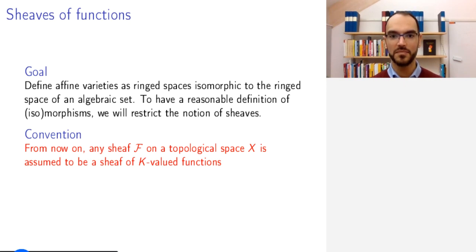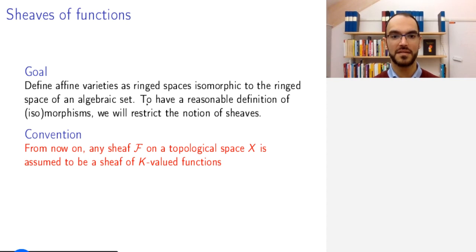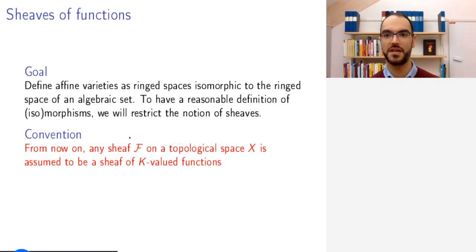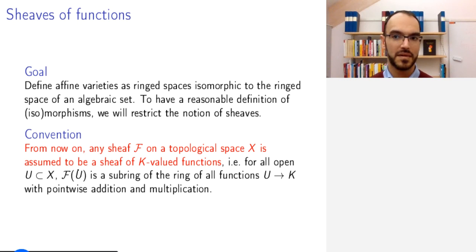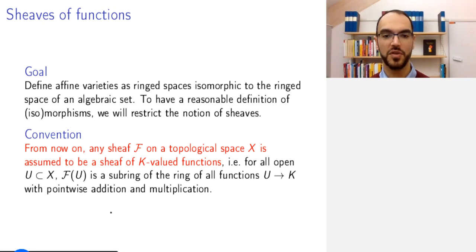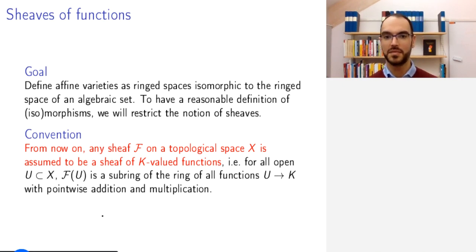From now on, whenever we see the word sheaf on a topological space, we assume that it is a sheaf of K-valued functions on this space. K is our once-and-for-all fixed algebraically closed field. What we mean is that F(U) should not be any arbitrary ring — it should be a subring of the ring of all functions from U to K with pointwise addition and pointwise multiplication. So the sections of our sheaf, the elements of F(U), should be honest functions.